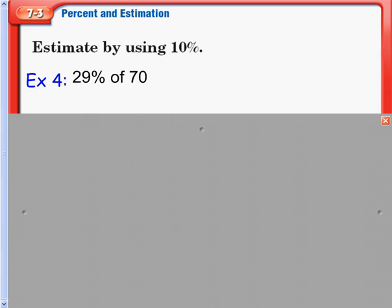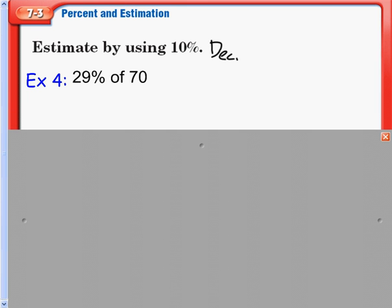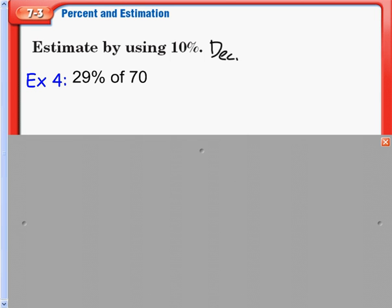The next slide gives us that we are estimating by using 10%. And in this case we are actually using decimals now. So our first example is 29% of 70. This is a two-step problem now. We round 29% to the nearest tenth percent, and 29% is close to 30%. So I'll do my arrow and write 30%.